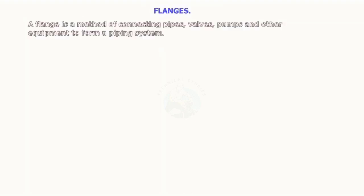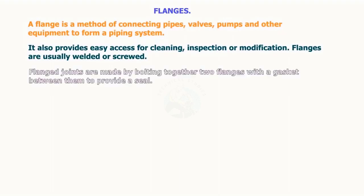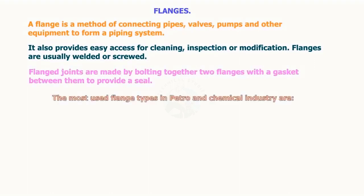A flange is a method of connecting pipes, valves, pumps, and other equipment to form a piping system. It also provides easy access for cleaning, inspection, or modification. Flanges are usually welded or screwed. Flange joints are made by bolting together two flanges with a gasket between them to provide a seal. The most used flange types in the petrochemical industry are listed as follows.